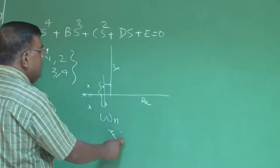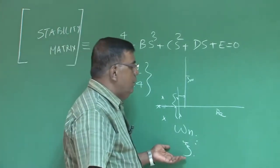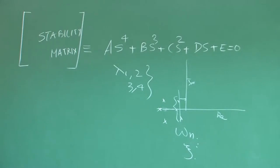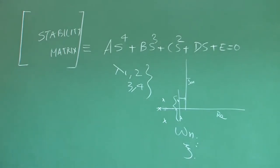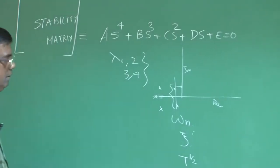We need to change ωn and ζ depending upon our requirement, which is decided by the handling qualities of an airplane. Today we will be discussing how to change ωn and ζ to satisfy the handling qualities. These are primarily characterized or benchmarked through the values of ωn and ζ, or their product, for different modes: longitudinal short period, phugoid, lateral-directional roll mode, and Dutch roll frequencies. All are focused towards ωn, ζ, or sometimes time to half amplitude, t½.